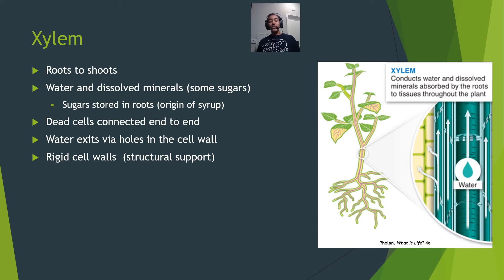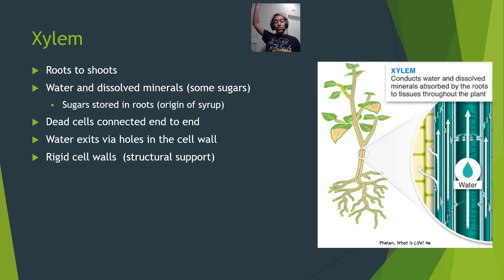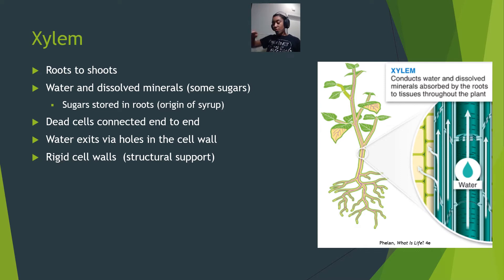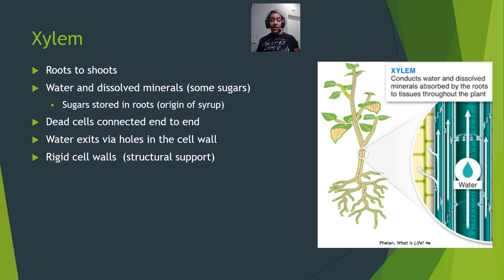The xylem runs from the roots to the shoots and is responsible for transporting mostly water and dissolved minerals that the roots pull in from the soil, moving it up to the shoots and leaves. Leaves are not generally able to directly access water, so it must be brought up from the roots through the xylem.